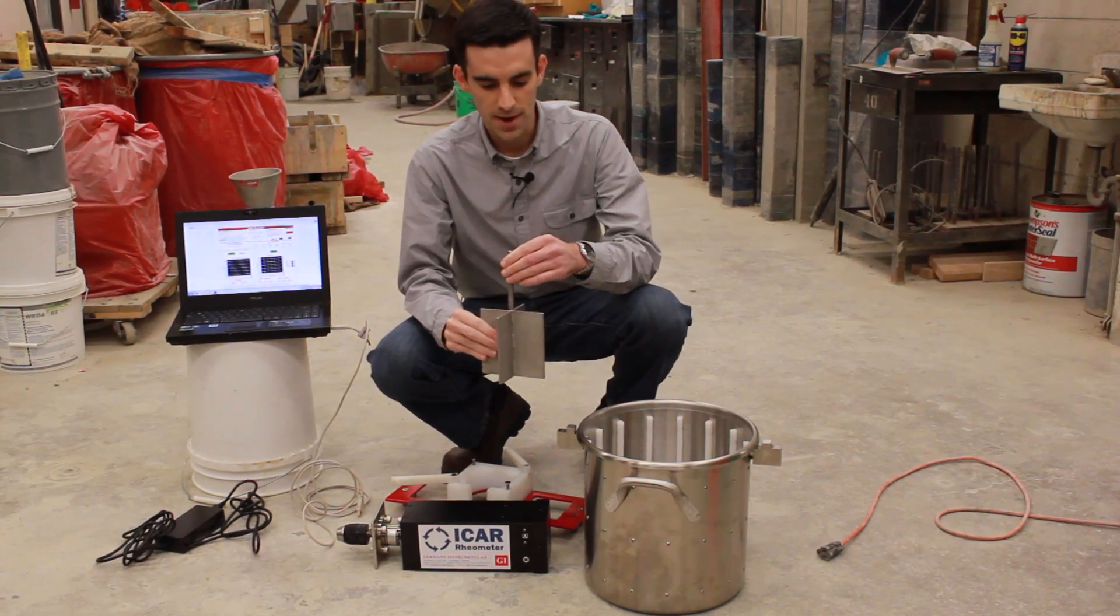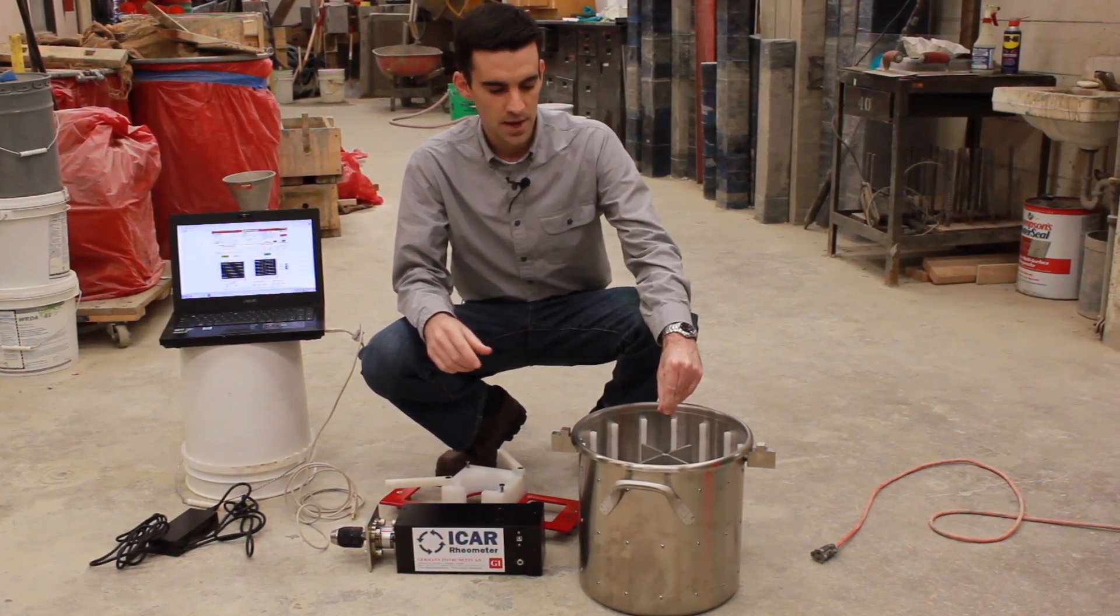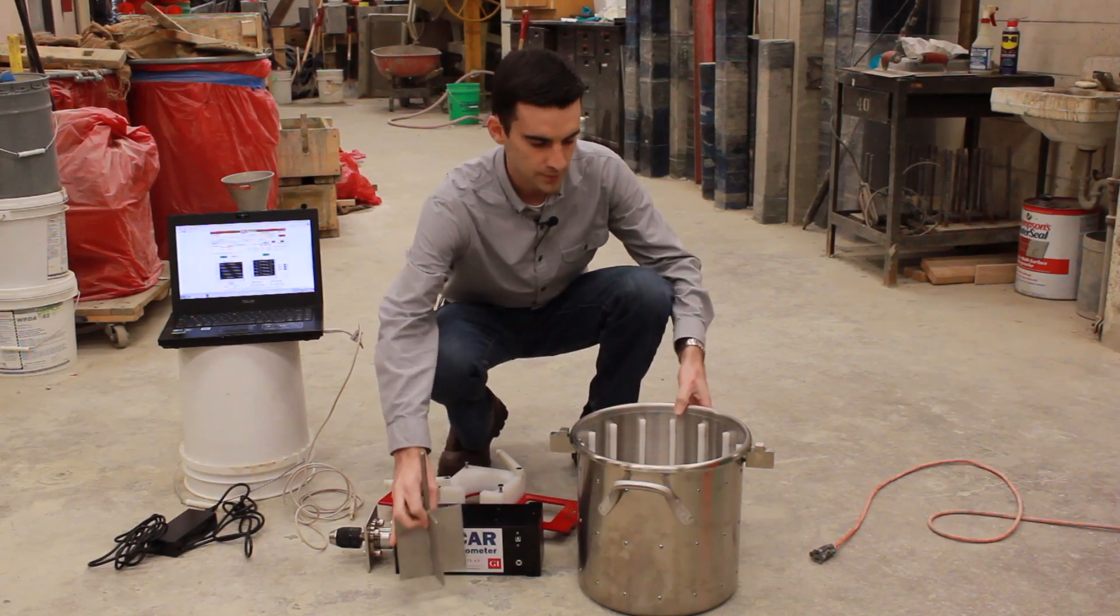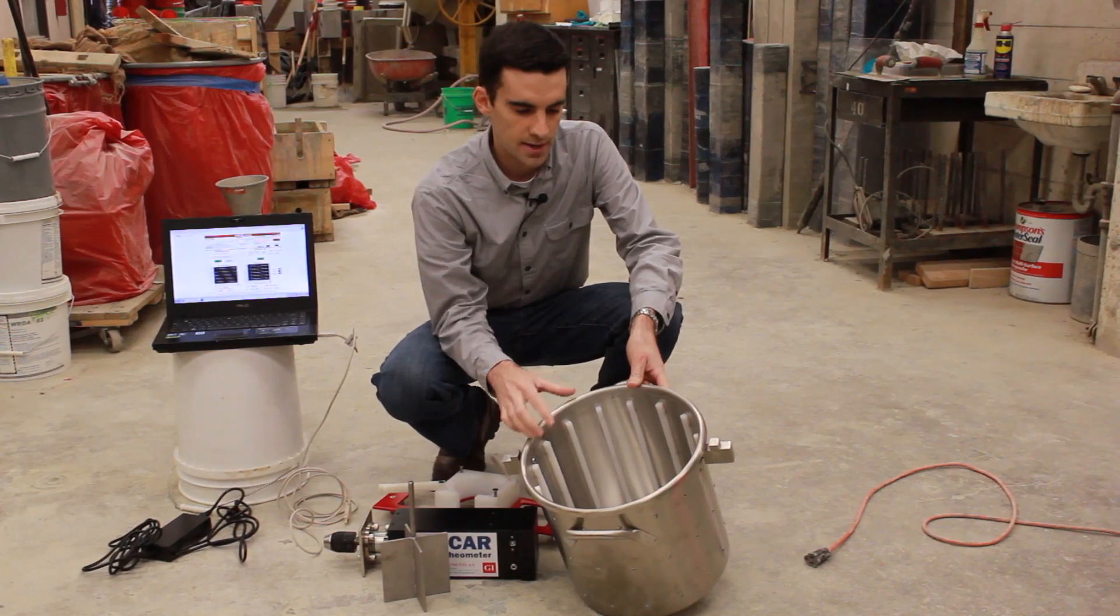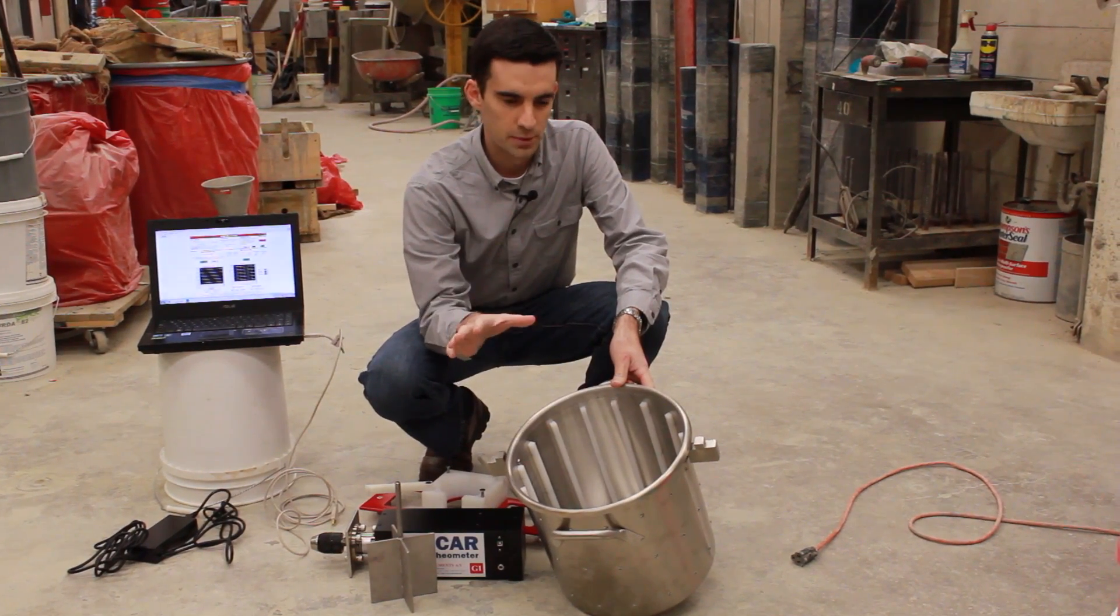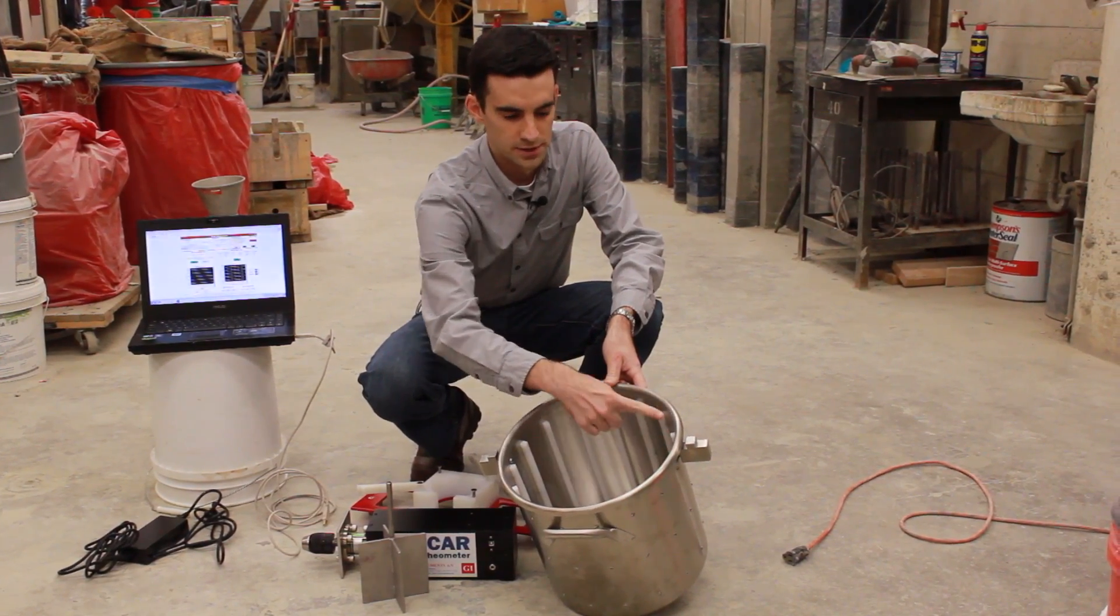We position the vane in the center of the container. The container has strips on the side. These prevent slippage. And when we fill the container with concrete, we always fill to the top of the strips.